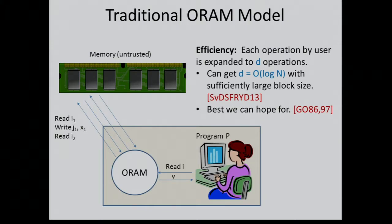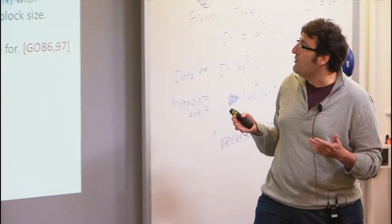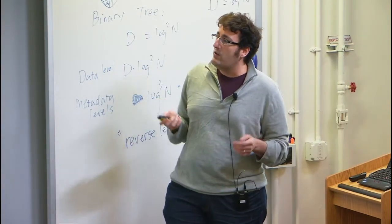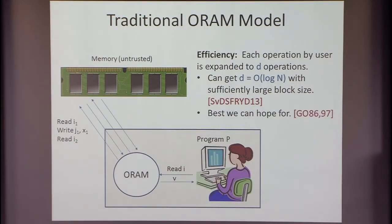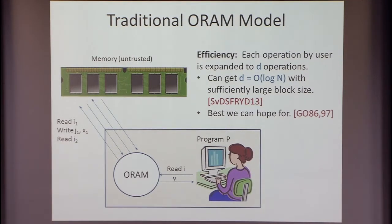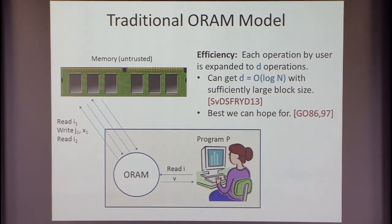This summarizes what Elaine told you. The way we measure efficiency in this model is: for each logical operation the program is doing, how many actual logical or physical operations does it get translated into? I'll call that the overhead d. We can get log n overhead with sufficiently large block size using the Path ORAM scheme. We even have a lower bound by Goldreich and Ostrovsky that tells you this is in some sense the best you can hope for. There are caveats in that lower bound, so take it with a grain of salt. But at the very least, we don't know how to do better in this model.